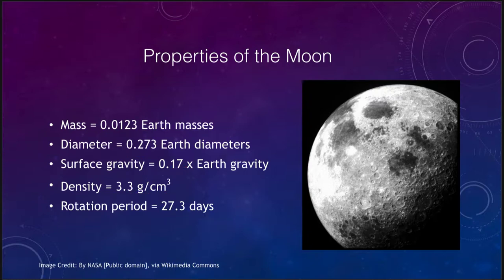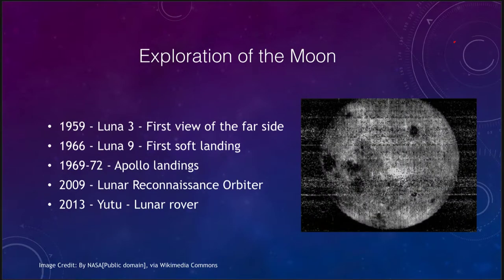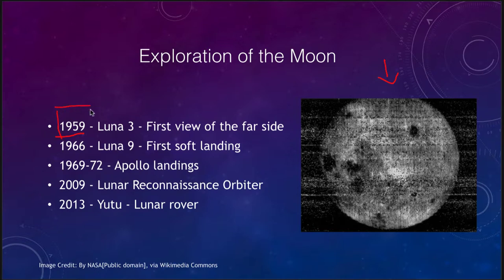The moon is the object we've been able to study for the longest time, yet the far side of the moon is something we didn't know about, because one side is always facing us. It was not until 1959 that the Luna 3 probe brought back the first view of the far side, pictured here. It looks quite different from the near side — the near side is dominated by the dark areas we call the Maria, while on the far side there are just a few darker areas and most of it is a much lighter region. Until 1959, we did not even know what the far side looked like.